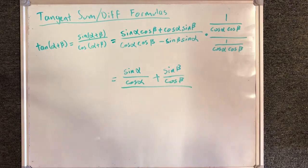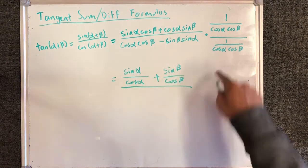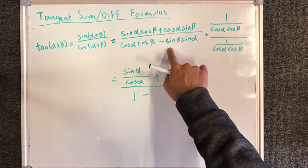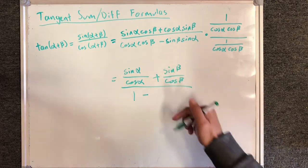On the denominator, I will have cosine alpha cosine beta times 1 over itself, that's 1, minus sine alpha sine beta over cosine alpha cosine beta.